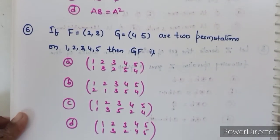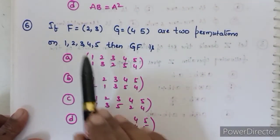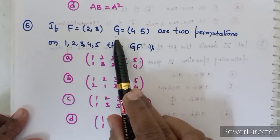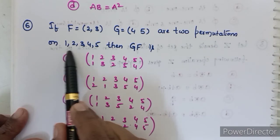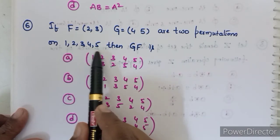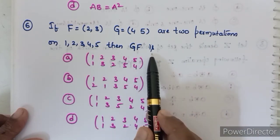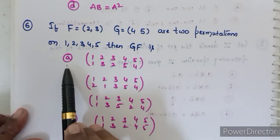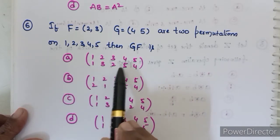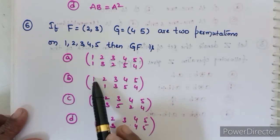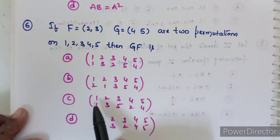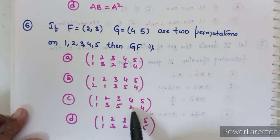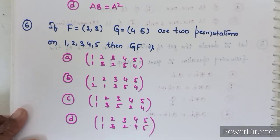Sixth question: if F = (2 3) and G = (4 5) are permutations on {1,2,3,4,5}, then G·F is which of the options? G = (4 5) means 4→5, 5→4, and elements 1, 2, 3 map to themselves. F = (2 3) means 2→3, 3→2, and elements 1, 4, 5 map to themselves.